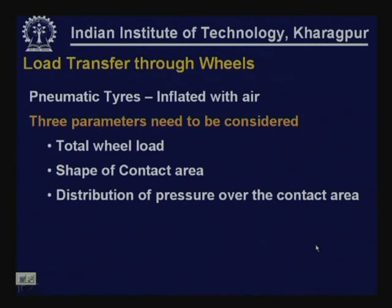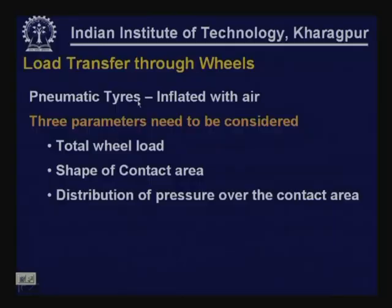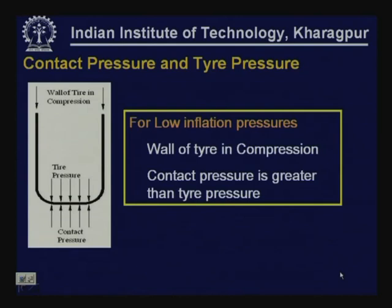The gross load is transferred through axles, and each axle transmits load via wheels — either single or dual — to the pavement surface. For pneumatic tires, three important parameters must be considered: the total weight transferred by the wheel, the shape of the contact area, and the distribution of pressure over that contact area.